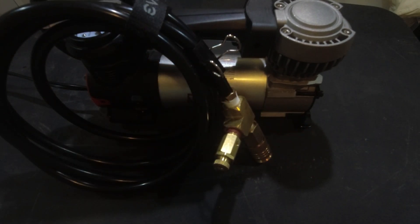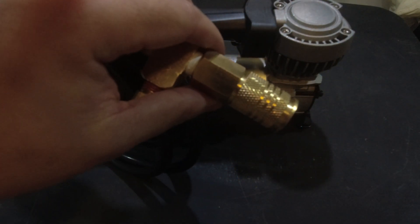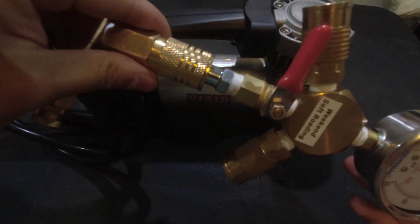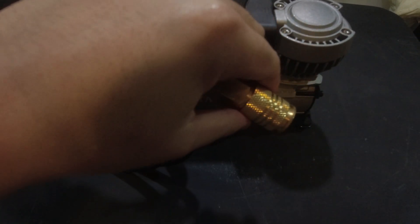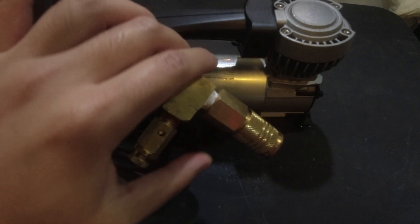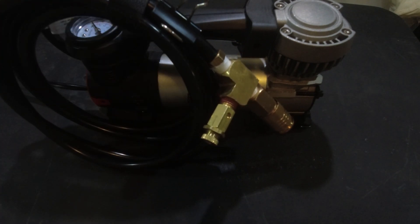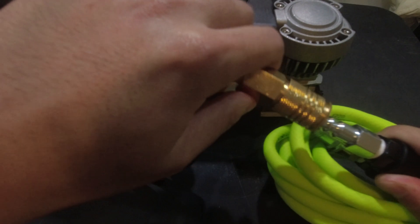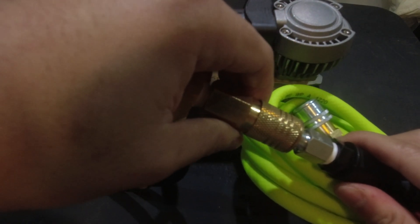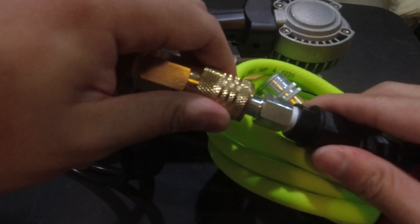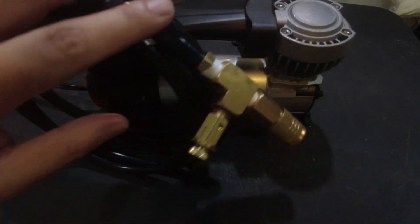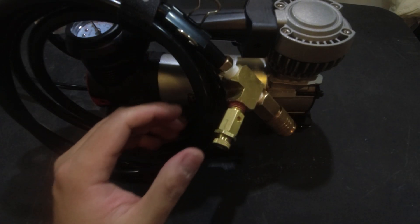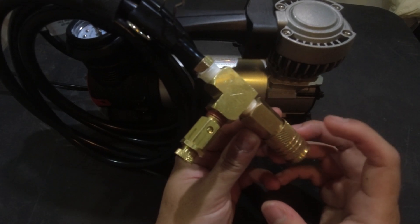This is just a regular coupler that connects to the manifold that we built. You could directly plug this into one of the hoses as well if you need to. This is a two tire inflation system so obviously you're going to want to use the manifold.